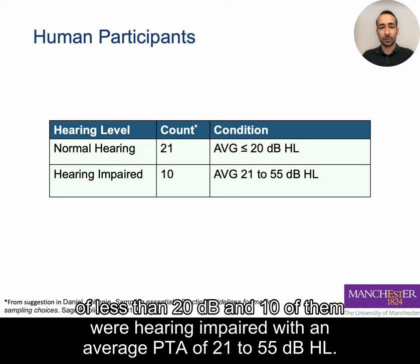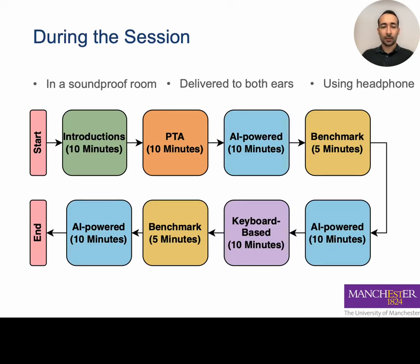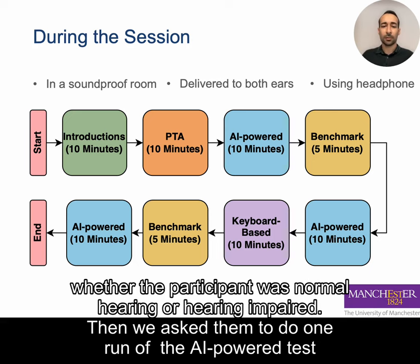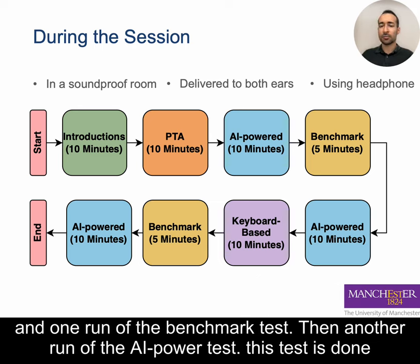The session started with instructions and consent form signing. Then we performed a PTA to determine whether the participant was normal hearing or hearing impaired. After that, we asked them to do one run of the AI-powered test and one run of the benchmark test, followed by another run of the AI-powered test.